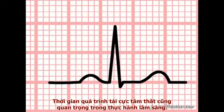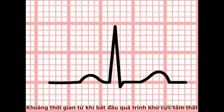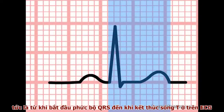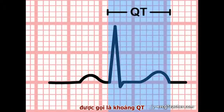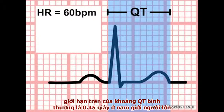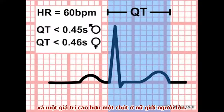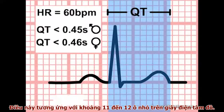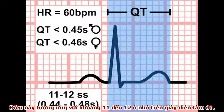The duration of ventricular repolarization is also important in clinical practice. The time between the onset of ventricular depolarization and the end of ventricular repolarization — that is, the beginning of the QRS complex and the end of the T wave on the ECG — is termed the QT interval. When the heart rate is 60 beats per minute, the QT interval should be less than 0.45 seconds in an adult male, with a slightly higher upper limit for adult females. These upper limits lie between 11 and 12 small squares on the ECG paper.